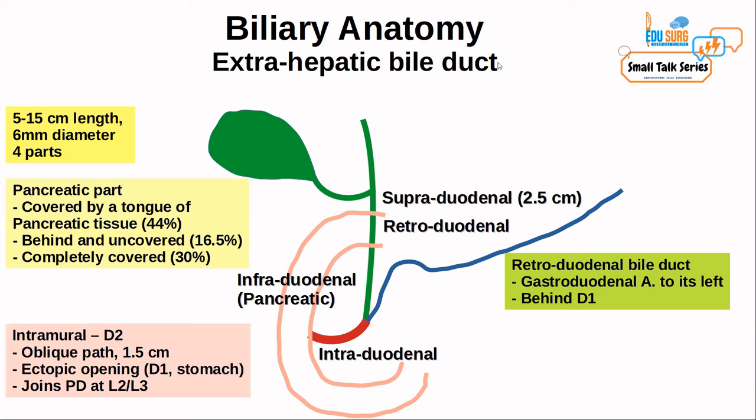The fourth part of the extrahepatic bile duct is the intraduodenal or intramural part. It has an oblique course in the medial wall of the second part of the duodenum and is 1.5 centimeters in length usually. If there is an ectopic opening of the common channel or extrahepatic bile duct, it can open in the first part of the duodenum or the stomach. In classical anatomy it joins the pancreatic duct at an oblique course at the level of L2–L3 in the second part of the duodenum.